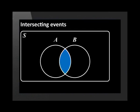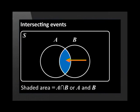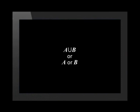This Venn diagram shows events that intersect. If the events are not mutually exclusive, then the two circles will overlap. The shaded area is called the intersection and shows where the events A and B take place at the same time. We write this as A intersection B, or A and B. The union of A and B is an event that consists of all outcomes that are in A or B. We write the union as A union B, or as A or B.